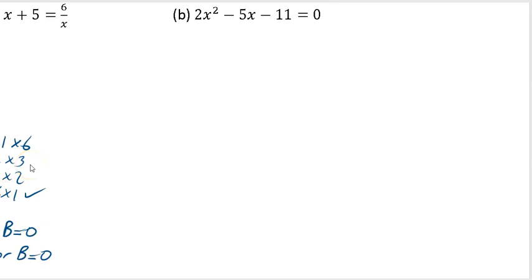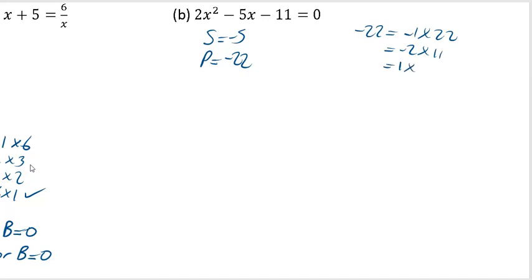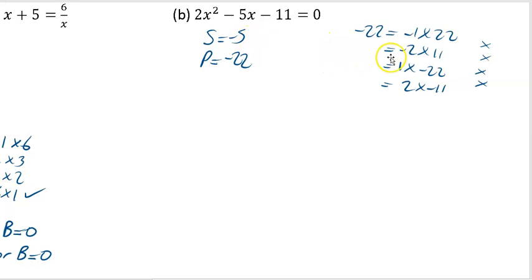In this one, it will not factorize using the sum and product method — we'll show you why and then use the quadratic formula. Our sum is equal to minus 5, and the product is 2 times minus 11, so minus 22. Going through the factor pairs of minus 22: minus 1 and 22, minus 2 and 11, 1 and minus 22, 2 and minus 11 — none of those add to give minus 5. So you can't factorize it, and you must use the quadratic formula.